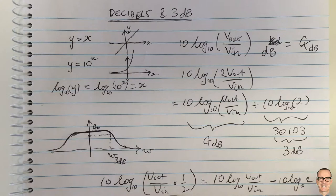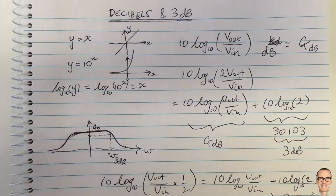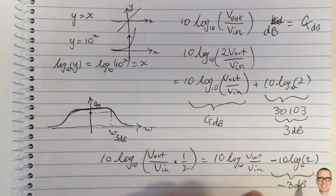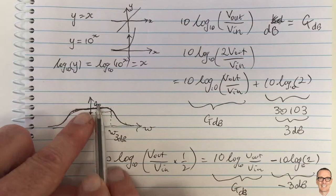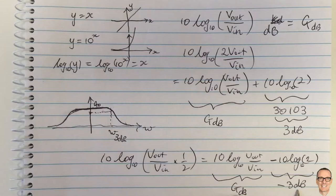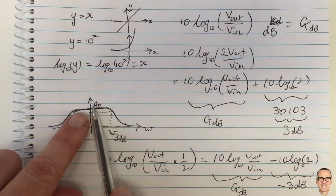...so if you have halved the gain then you have reduced the gain by 3 dB in the decibel so this is gain in decibels and then we've halved the actual amplitude of the gain but that means we've gone down in decibels by minus 3 dB...